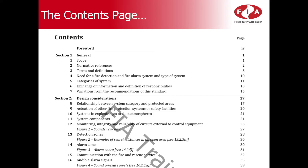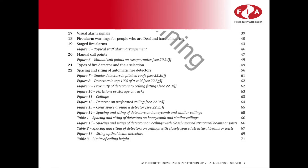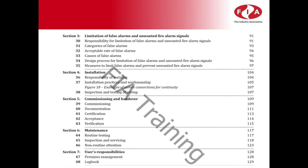The sections follow the general sequence of operations you'd expect to encounter on most projects. Section 1 contains the clauses for general information and requirements. Section 2 contains the clauses for the design considerations. Section 3 looks at the recommendations for the limitation of false alarms and unwanted fire signals. Section 4 covers the installation requirements. Section 5 looks at the commissioning and handover process, through to Section 6 for maintenance, and Section 7 for user responsibilities.